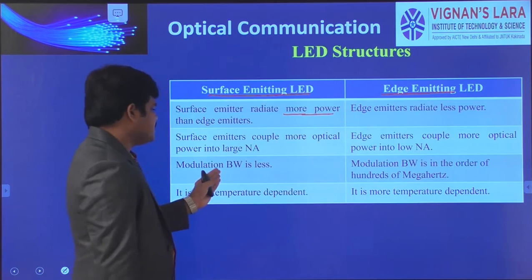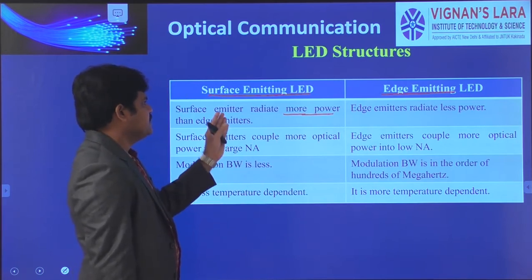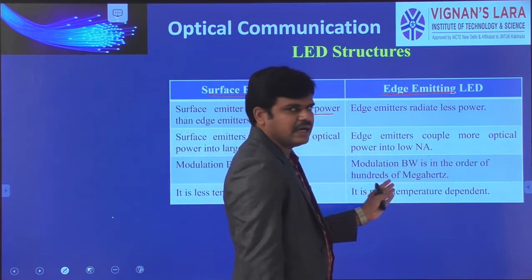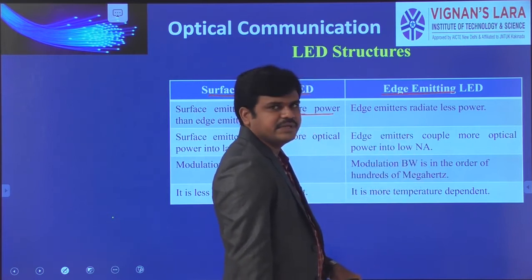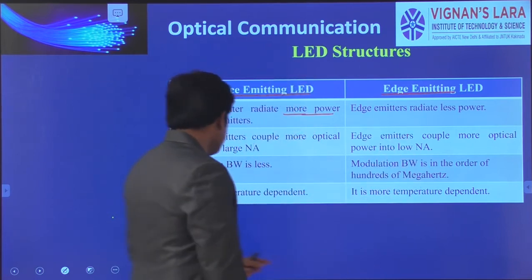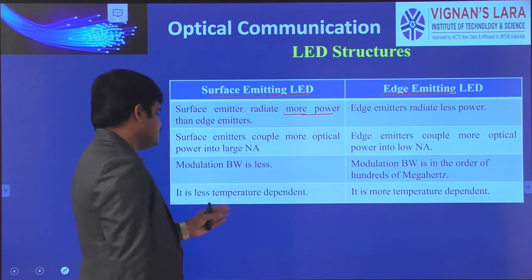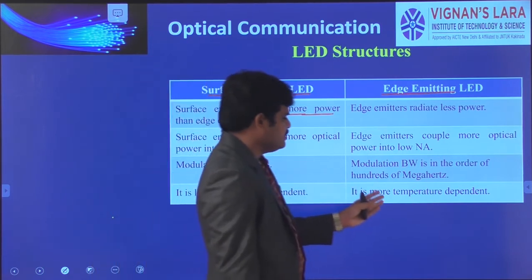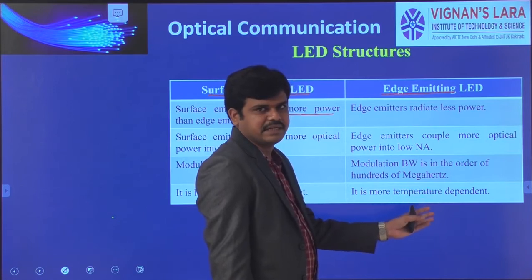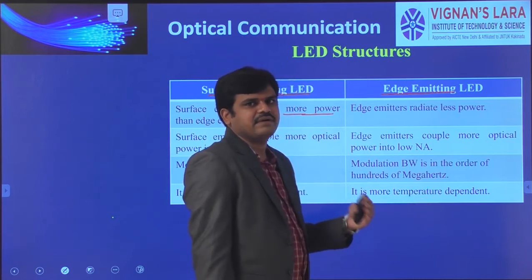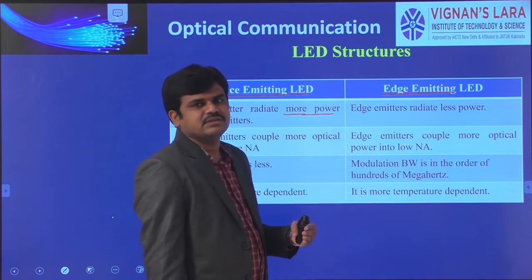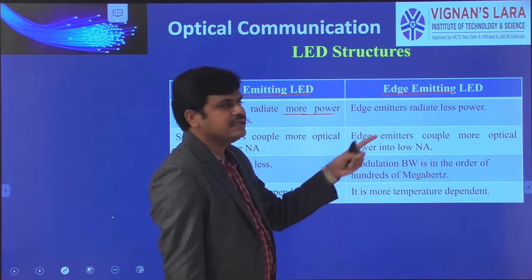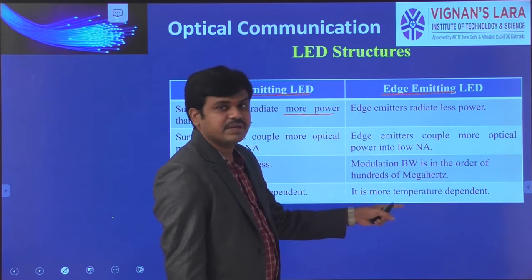The modulation bandwidth is less in surface emitting LEDs, whereas the modulation bandwidth is in the order of hundreds of megahertz in edge emitting LEDs. Surface emitting LEDs are less temperature dependent, whereas edge emitting LEDs are more temperature dependent — meaning the requirement of a heat sink is more.